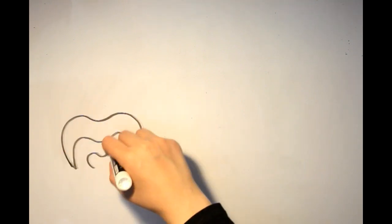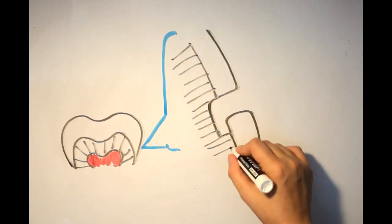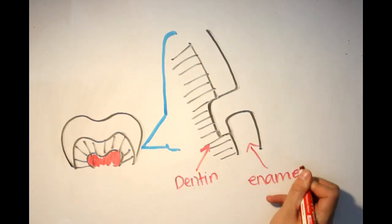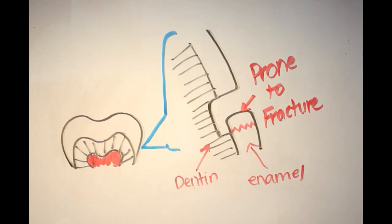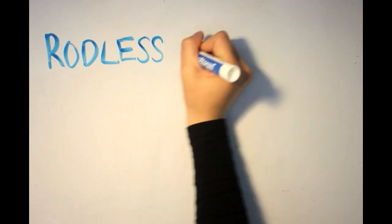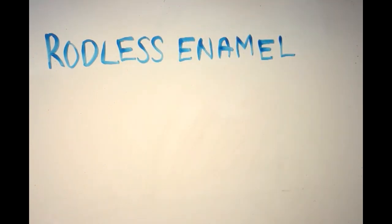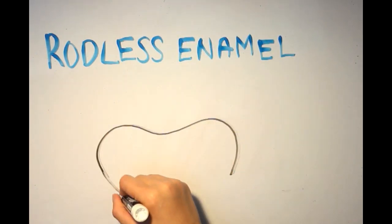So, how is enamel organized? It's important for us to understand the orientation of enamel in restorative dentistry, because unsupported enamel is prone to fracture. Enamel is organized into rods and interrods. The rods extend from the dentin to the outer surface of enamel.